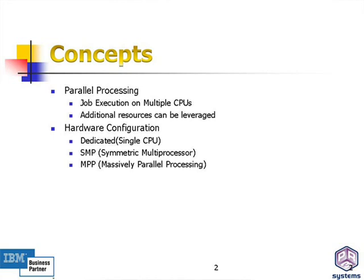The second important concept within parallel processing is hardware architecture. There are three main types used in the industry. The first is a dedicated single CPU machine — a laptop or desktop — which is the simplest architecture. The second is SMP, or symmetric multi-processing, where one machine has multiple CPUs that share the same disk and memory. The third is MPP, or massively parallel processing, where different machines each have their own CPU, disk, and memory, and all work together toward a common goal.